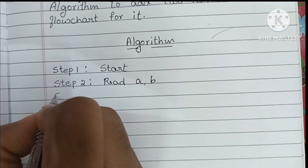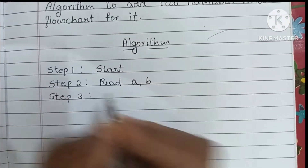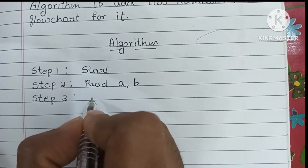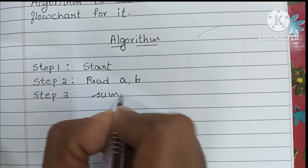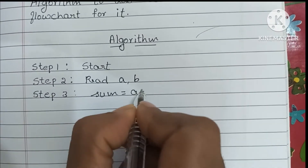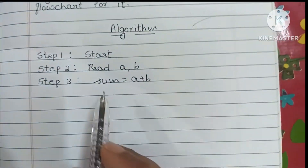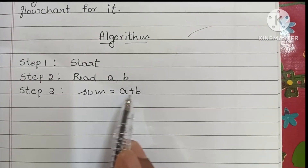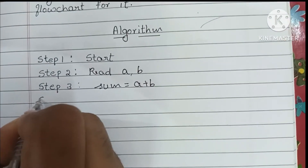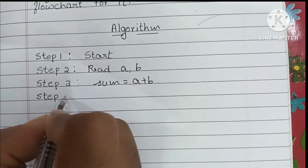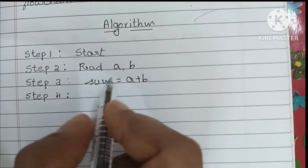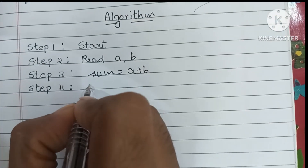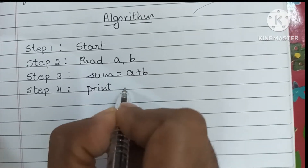In step three, we have to add two numbers a and b, so we calculate: sum is equal to a plus b. In step four, we have to display the sum, so we write: print sum.